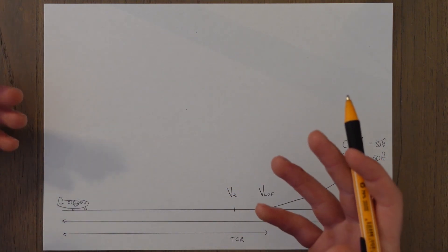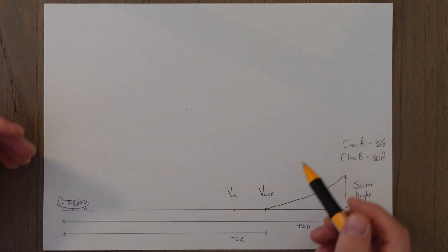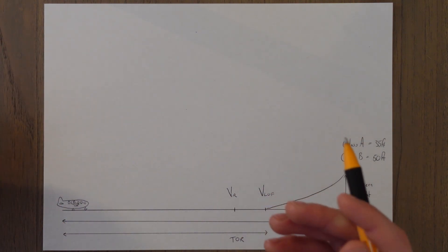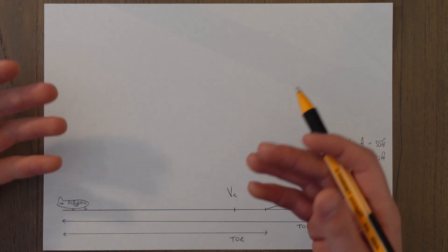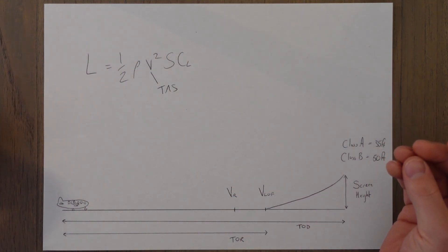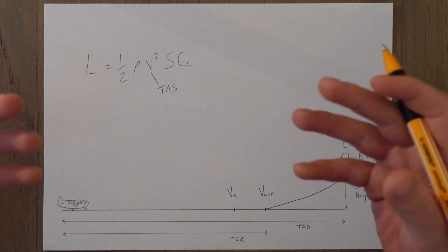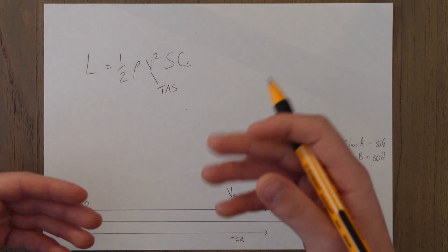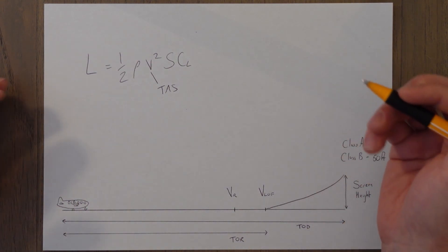These V speeds are an assigned indicated airspeed depending on weight and environmental conditions. Whilst we fly these speeds at the indicated values we can see on our instruments, the speed of rotate and lift off is all to do with the lift equation and therefore the true airspeed. The relationship between equivalent airspeed (EAS) and true airspeed (TAS) is: EAS equals TAS multiplied by the square root of the density divided by the density at sea level.